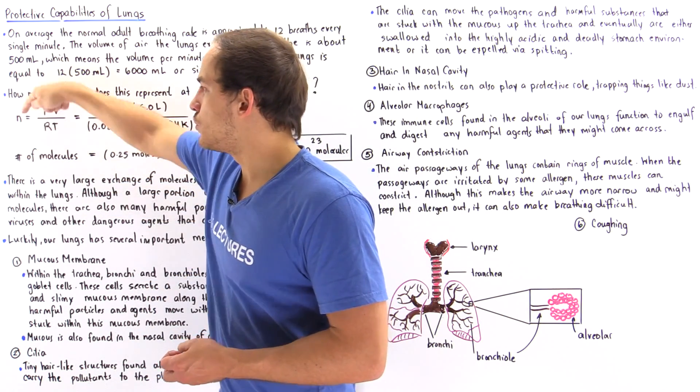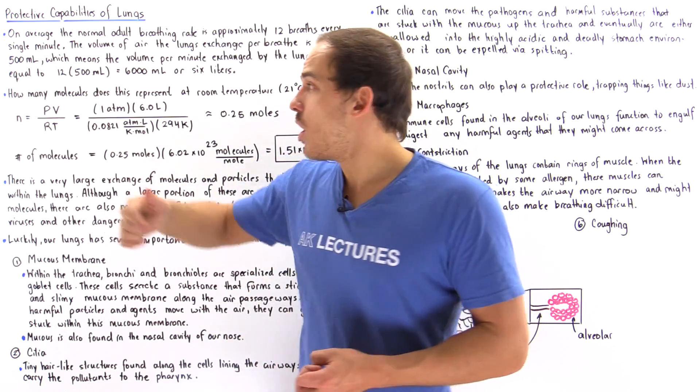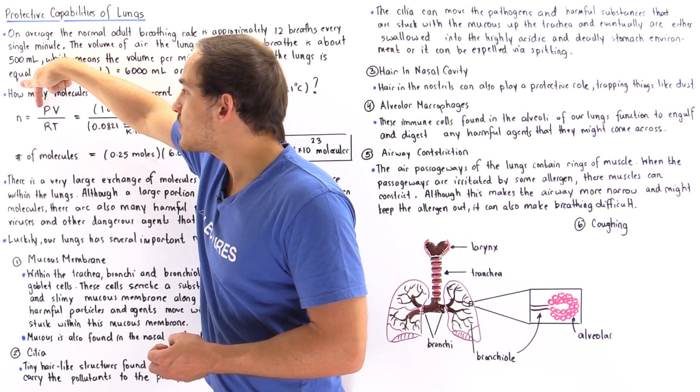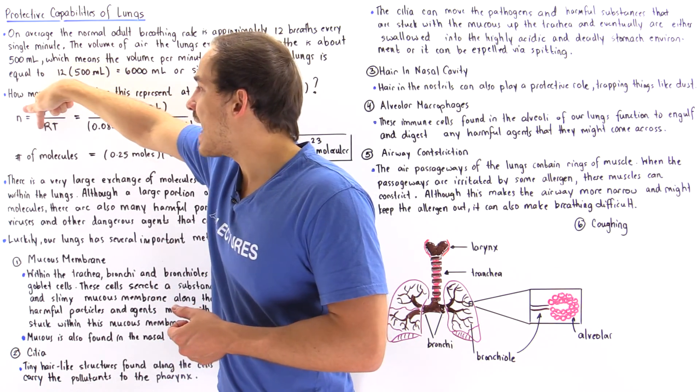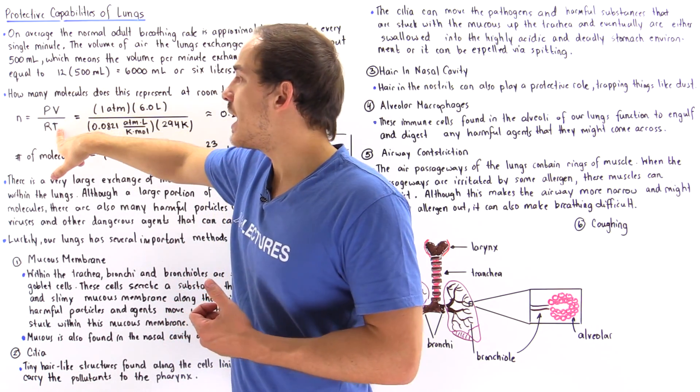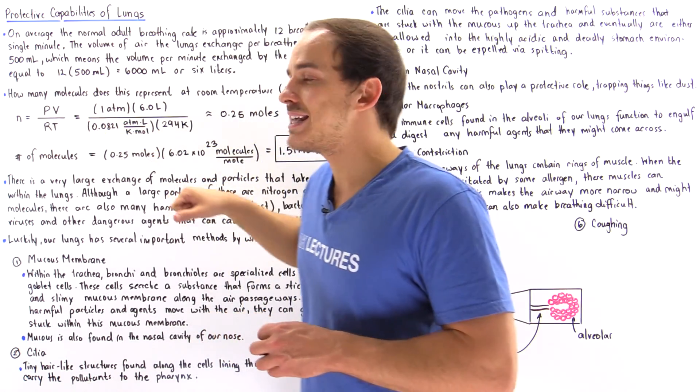So N is equal to—where N is our number of moles—the pressure in ATM multiplied by the volume in liters, divided by the gas constant R, multiplied by the temperature given to us in Kelvins.